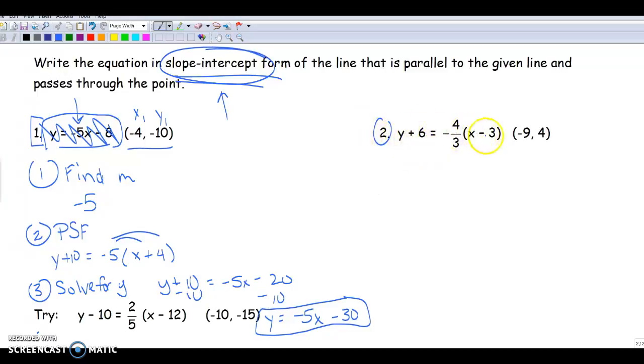this equation is in point-slope form. Point-slope form, m is going to be the number in front of the parentheses. So m in this particular equation is negative 4 thirds. I know that my slope has to be the same because it's parallel. So my slope is going to be the same, negative 4 thirds.